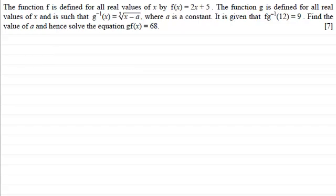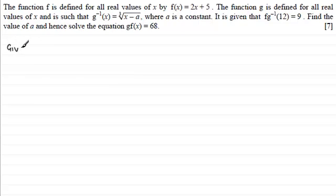Let's see how you got on. First of all, to find the value of a, I'm going to work off the result that we're given: fg⁻¹(12) = 9. So, given that f combined with the inverse function of g, when x equals 12, gives us 9.